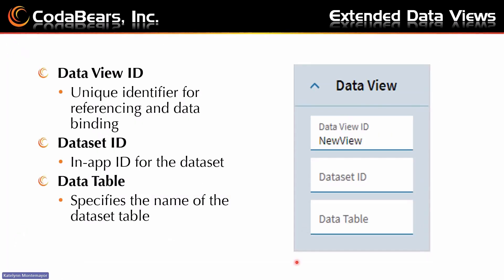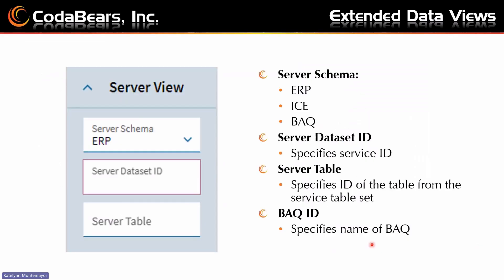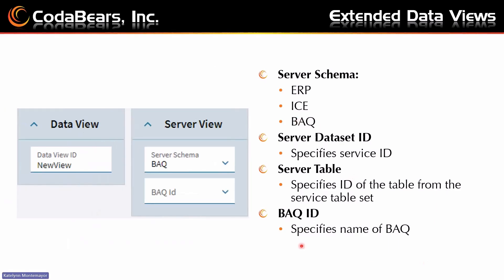To get started, we begin with the first section. The Data View ID is just going to be the identifier for referencing and for data binding. Your Dataset ID identifies the response data set from a service call. The Data Table maps a data table to the data view — it typically matches the ERP table name. Then we have the Server View, where you choose the server schema: ERP, ICE, or BAQ. And then the Service Set Data ID. A lot of these are just ID names and table names. The one that isn't shown here is the BAQ ID, which appears once you change the server schema to BAQ — that's where you put in the BAQ ID when loading a BAQ.